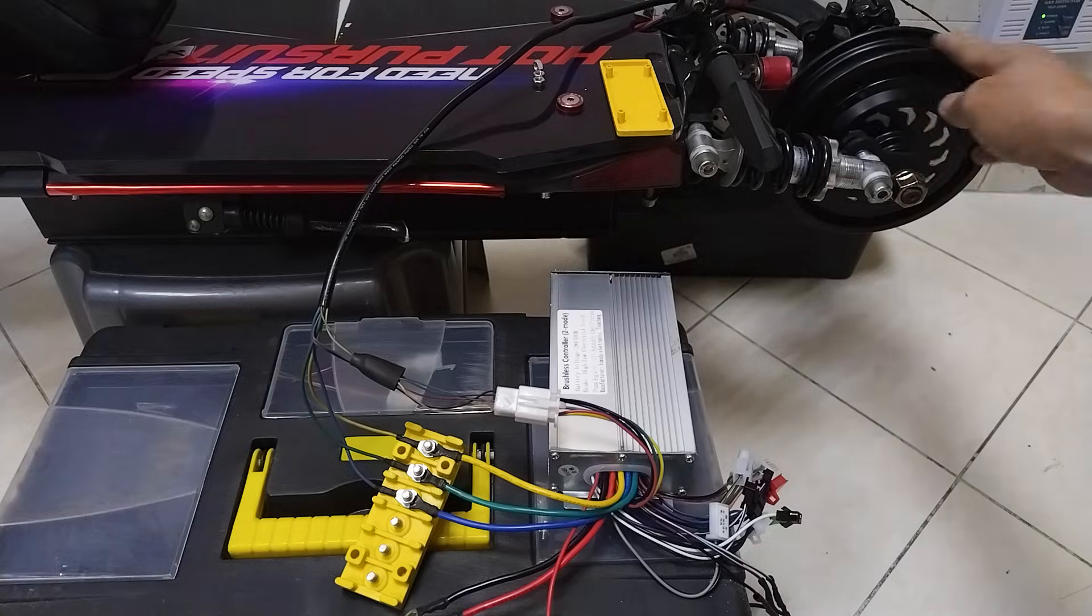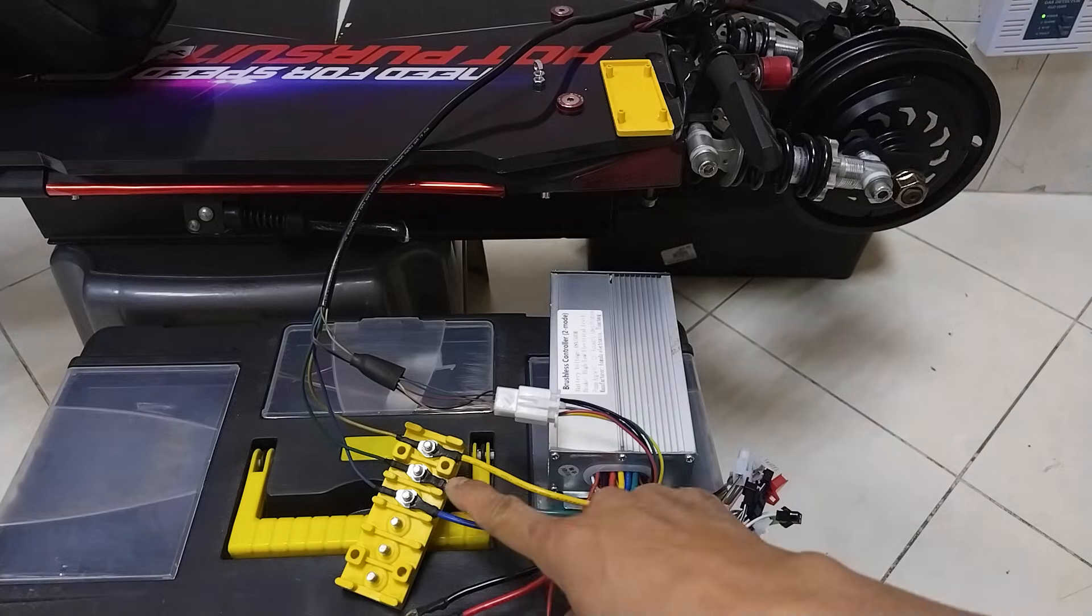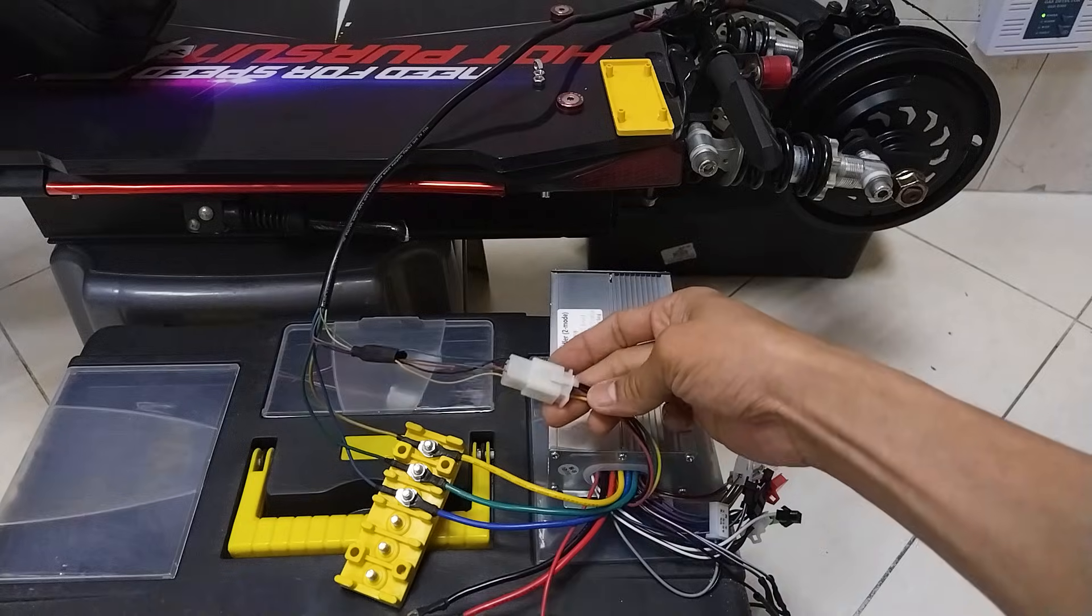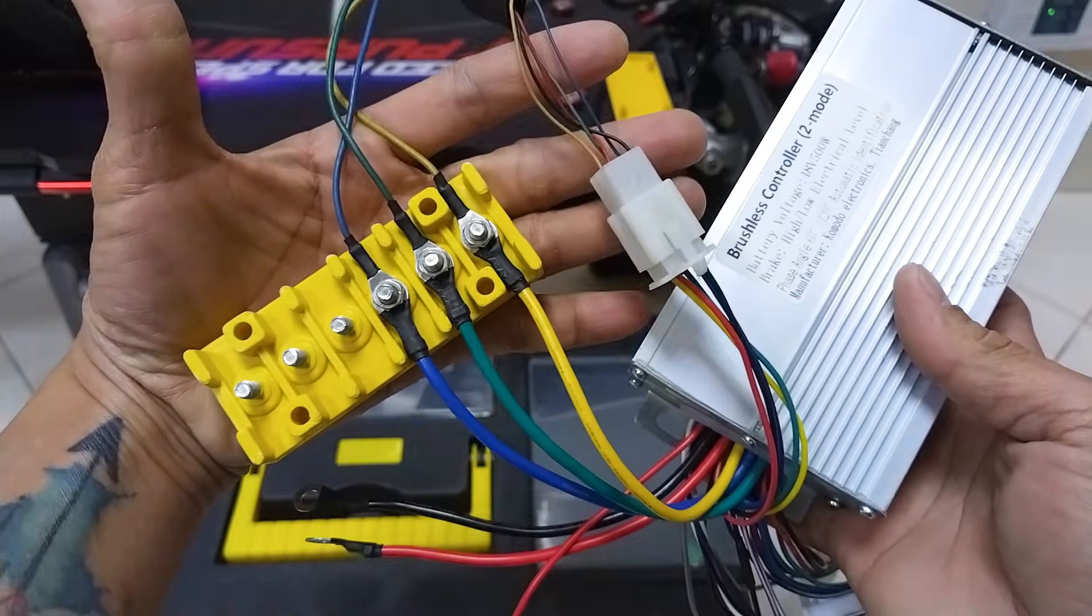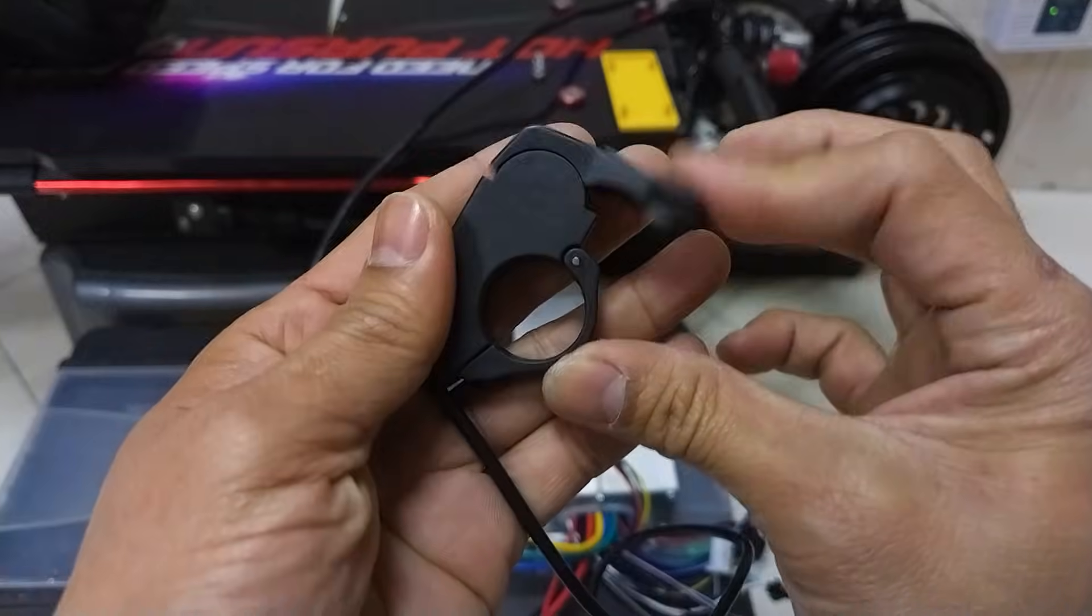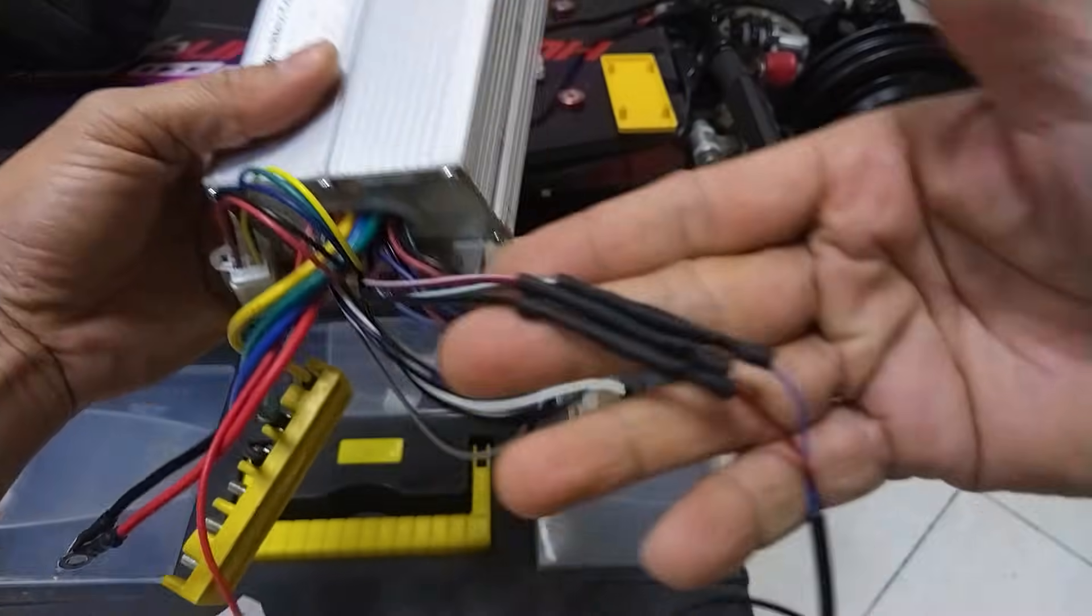To make this tutorial fast, I have already connected the hub motor to the controller and also the throttle beforehand. Let's start.